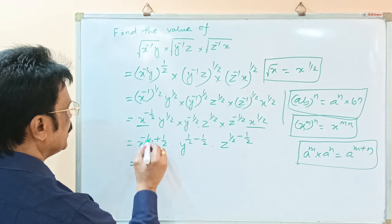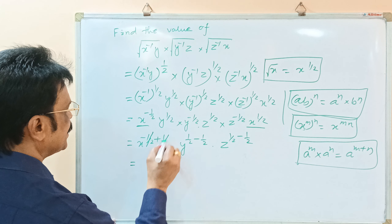So this is equal to: we can cancel this — x to the power 0, y to the power 0, and z to the power 0. We can cancel all of these, and they are all 0. We know that a to the power 0 is 1. So x to the power 0 is 1, y to the power 0 is 1, and z to the power 0 is also 1.